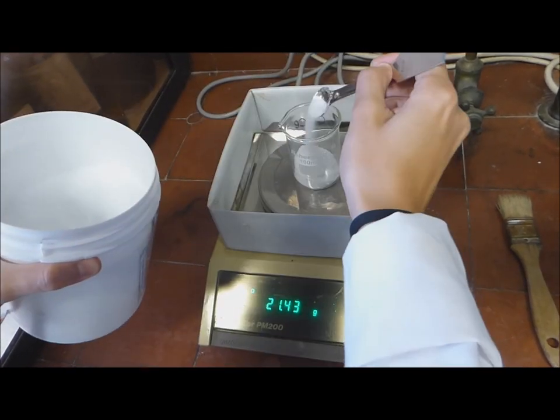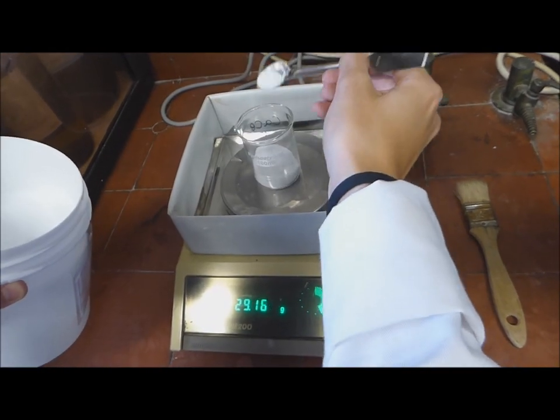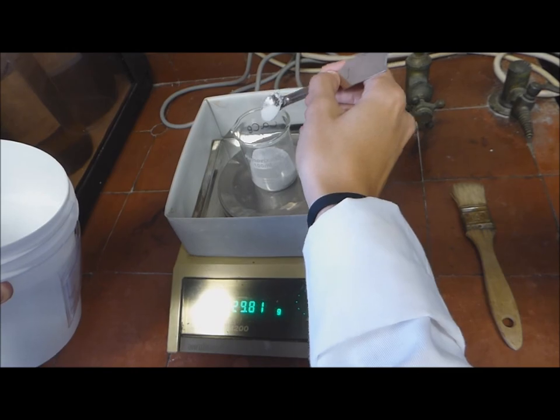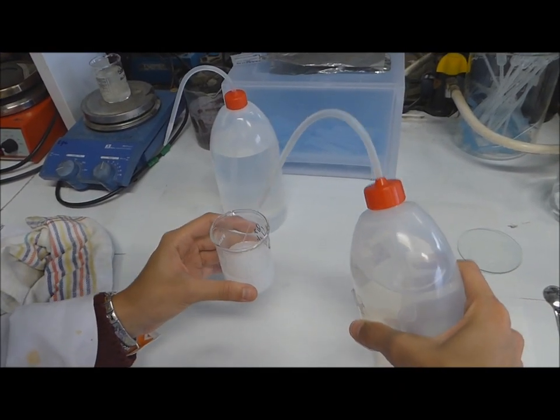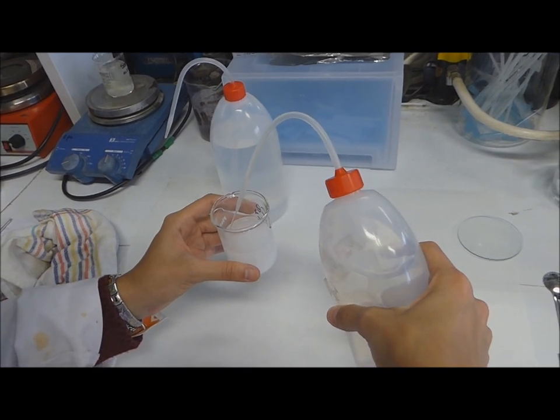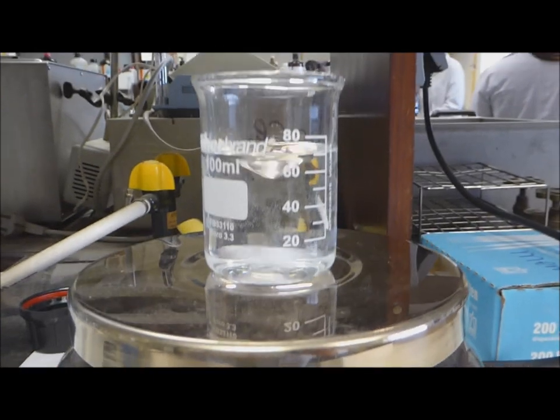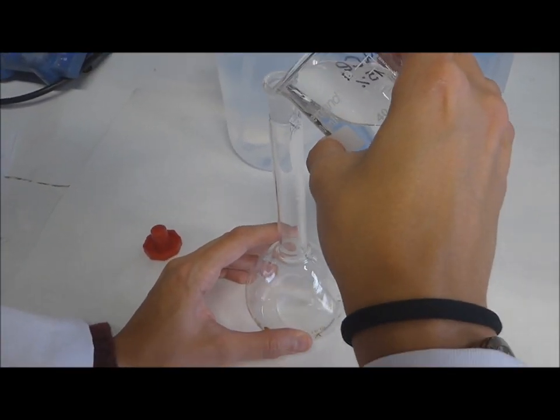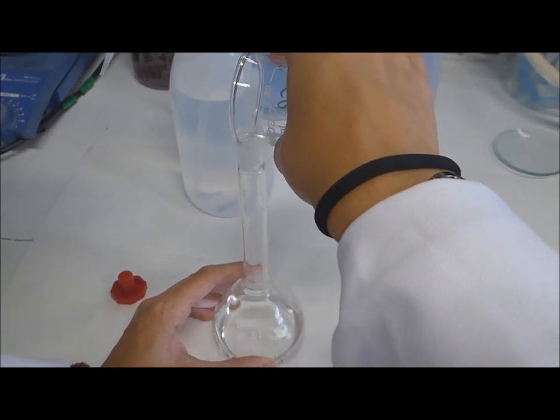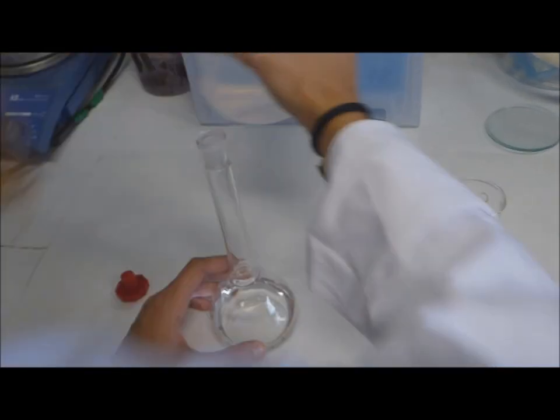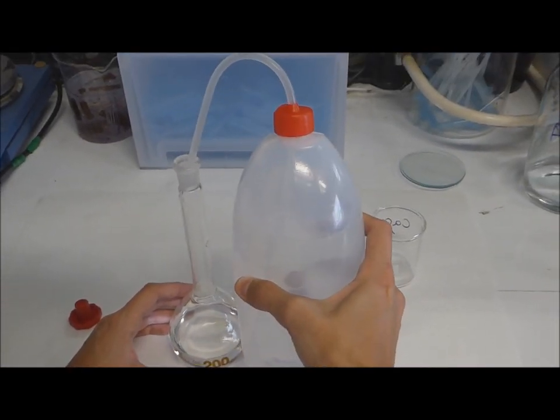We weigh 30 grams of calcium chloride and we add it into a tumbler of 100 milliliters. Then we add 100 milliliters of distilled water. It is an exothermic process so it's important to let it cool. After that we transfer it into a volumetric flask and we complete the volume until 200 milliliters.